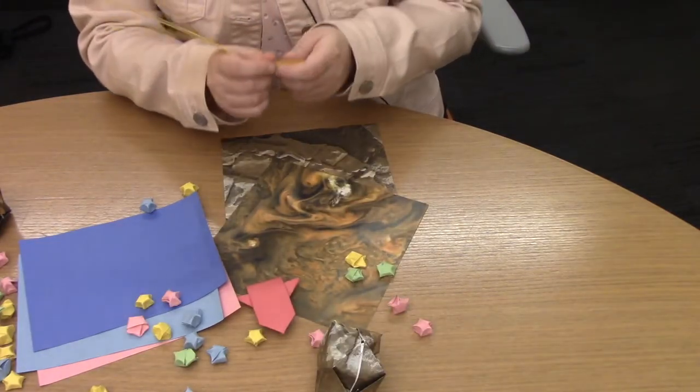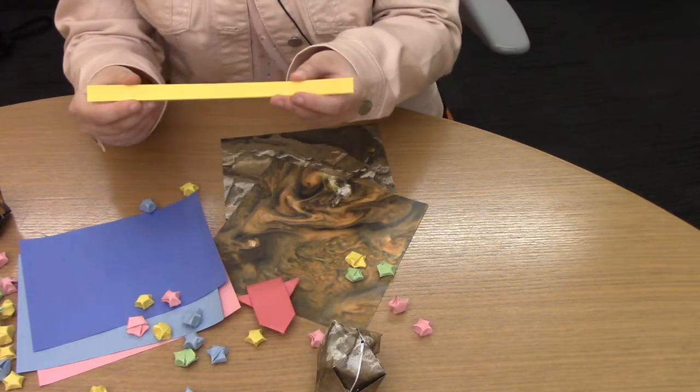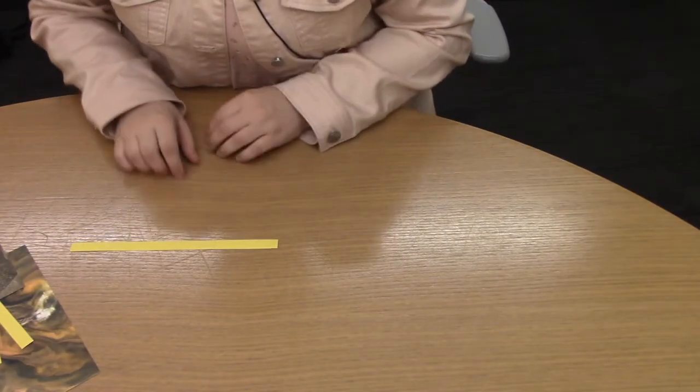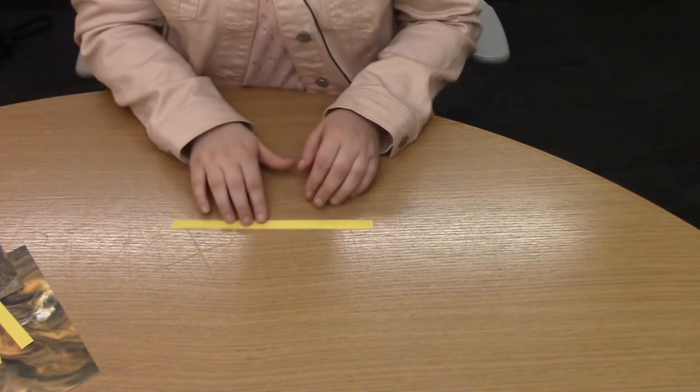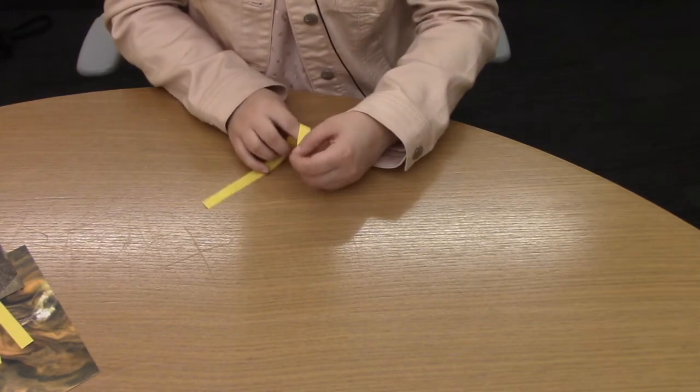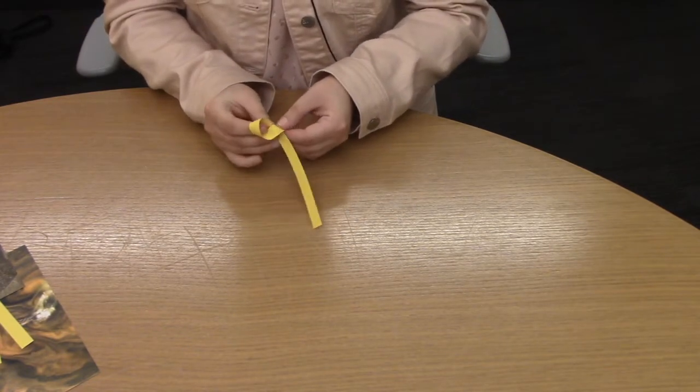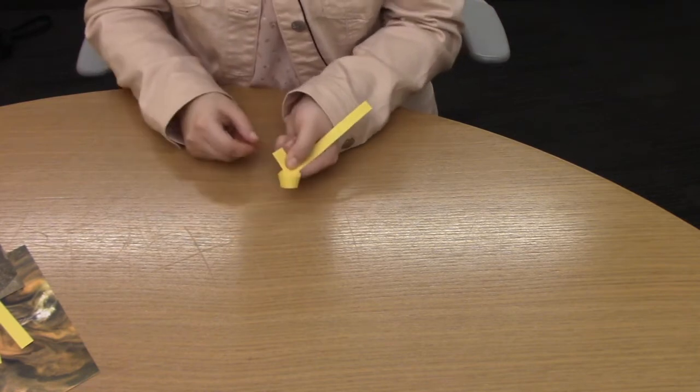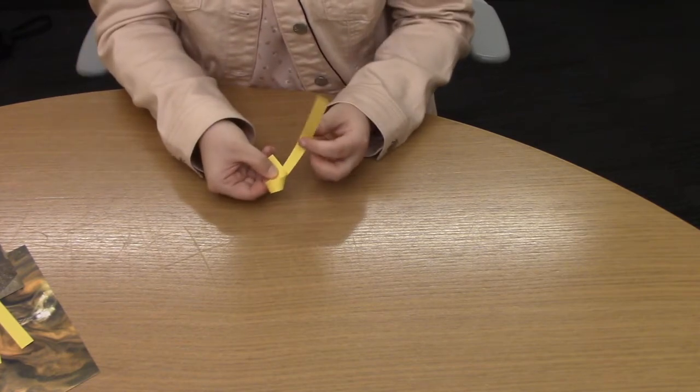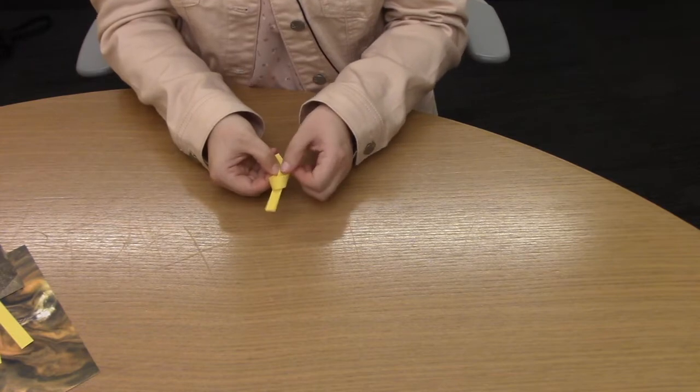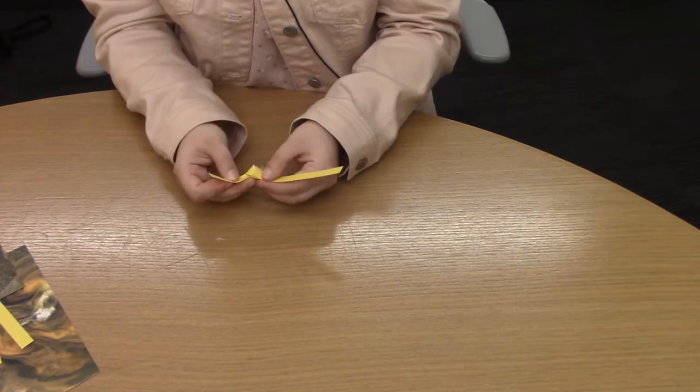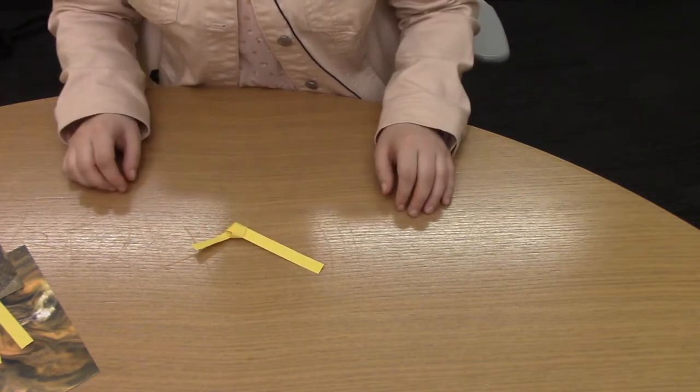For the stars, you are going to need a strip of paper that is a half inch wide and eight and a half inches long. You're going to start with a flat sheet of paper, wrap it around your finger so that you have a loop, and then you are going to put a strip of paper through the loop, almost like you're tying a knot.